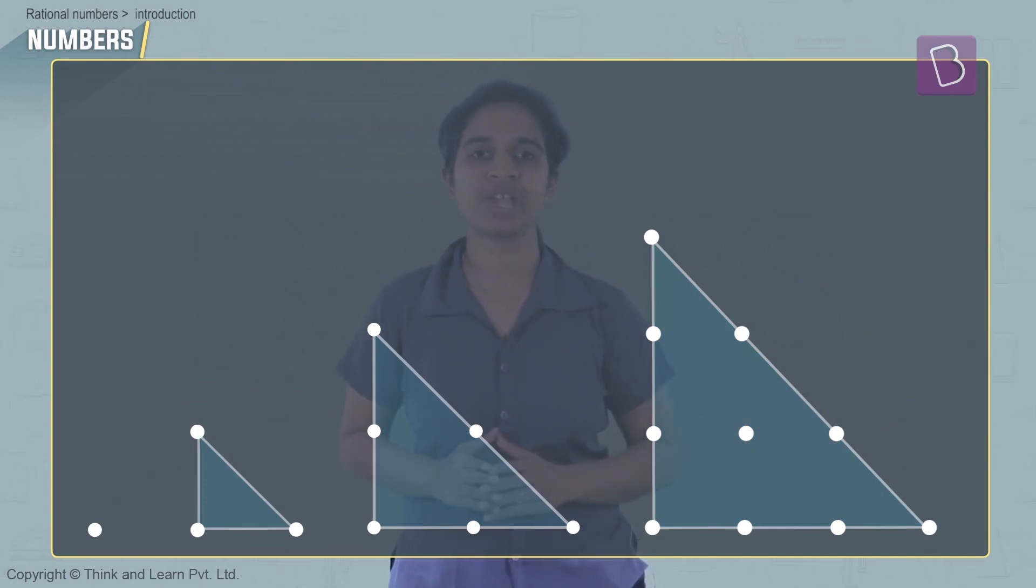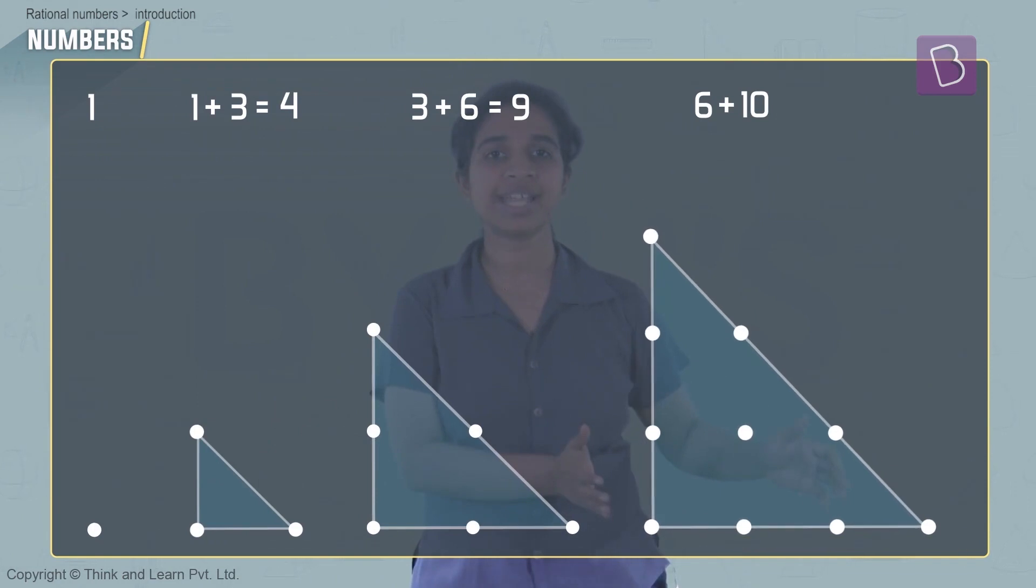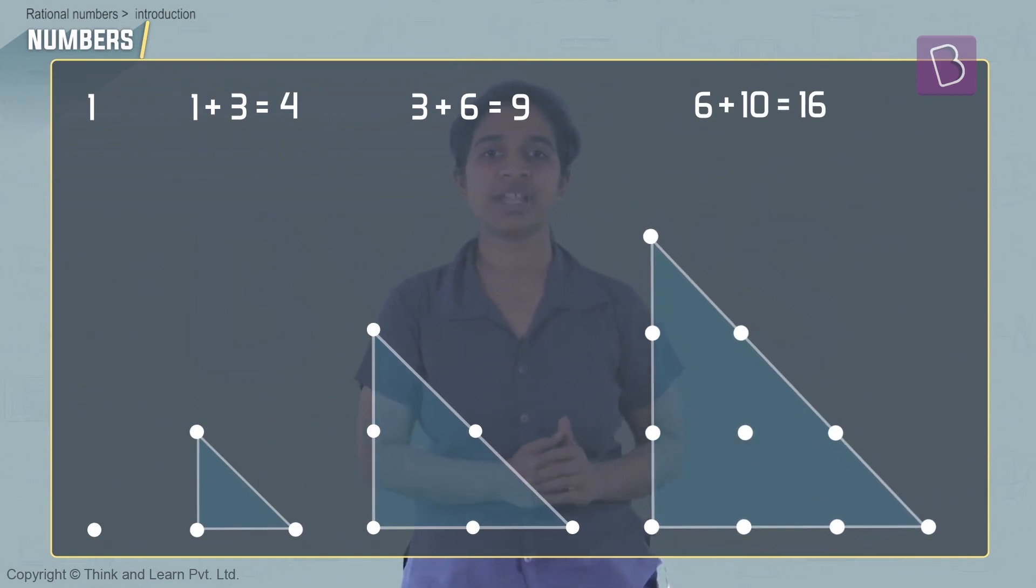Let's try it. We have 1. First, 1 and 3 gives you 4. 3 and 6 gives you 9—square again. 6 and 10 gives you 16—square again. So you get these square numbers: 1, 4, 9, 16 are nothing but square numbers.